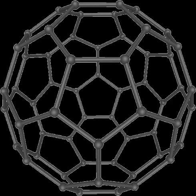Buckminsterfullerene is the smallest fullerene molecule containing pentagonal and hexagonal rings in which no two pentagons share an edge. It is also most common in terms of natural occurrence, as it can often be found in soot. The structure of C60 is a truncated icosahedron, which resembles an association football ball made of 20 hexagons and 12 pentagons, with a carbon atom at the vertices of each polygon and a bond along each polygon edge. The van der Waals diameter of a C60 molecule is about 1.1 nm, and the nucleus-to-nucleus diameter is about 0.71 nm.